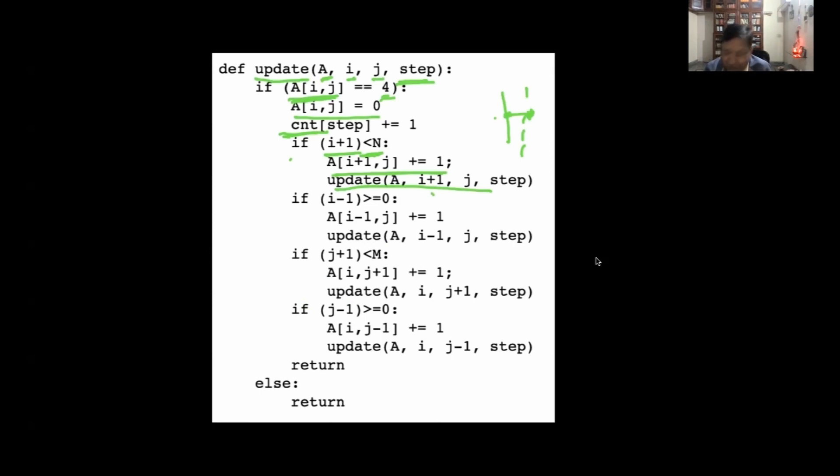By adding one. But if you update, you have to make sure it doesn't cause further avalanche. If it does, you call update again. This takes care of the recursive process, so one avalanche can cause more avalanches. We do it for all four neighbors.